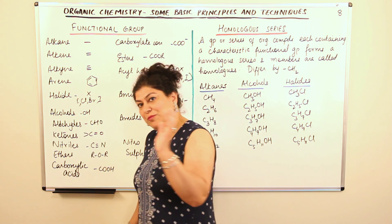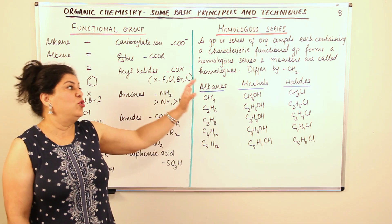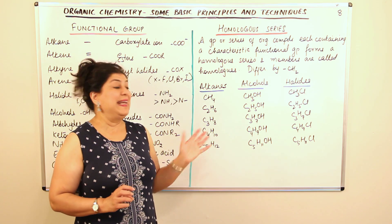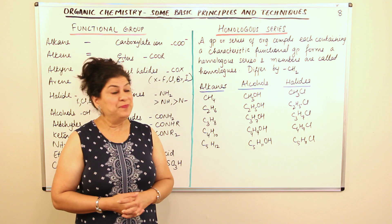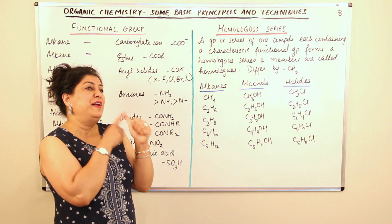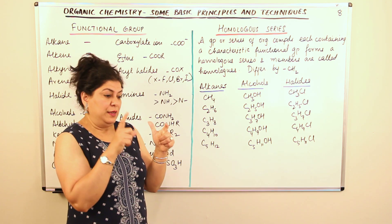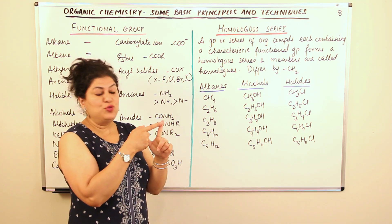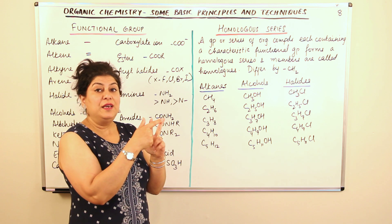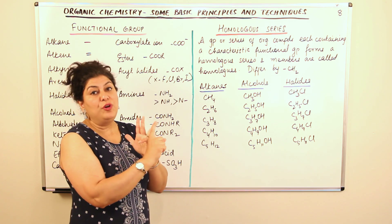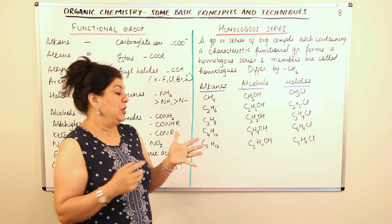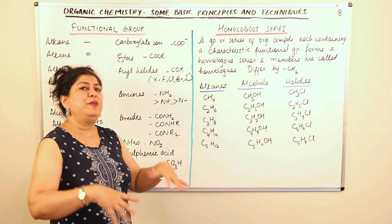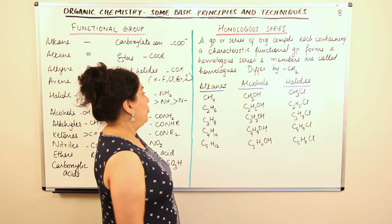Now let us come to the next concept: the homologous series. In class 10, you have done the homologous series of alkanes, alkenes, and alkynes. If you have one carbon atom in a molecule, we use the prefix meth. For two, eth. For three, prop. Four, but. Five, pent. So you have methane, ethane, propane, butane, pentane — those are the names, but we will be doing the nomenclature from the next video onwards.